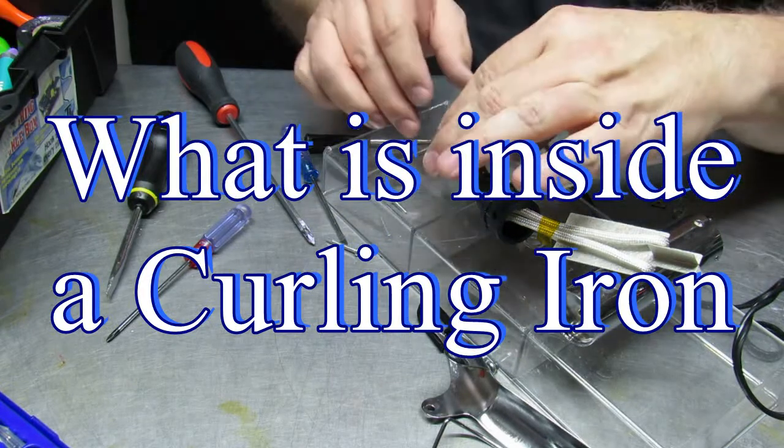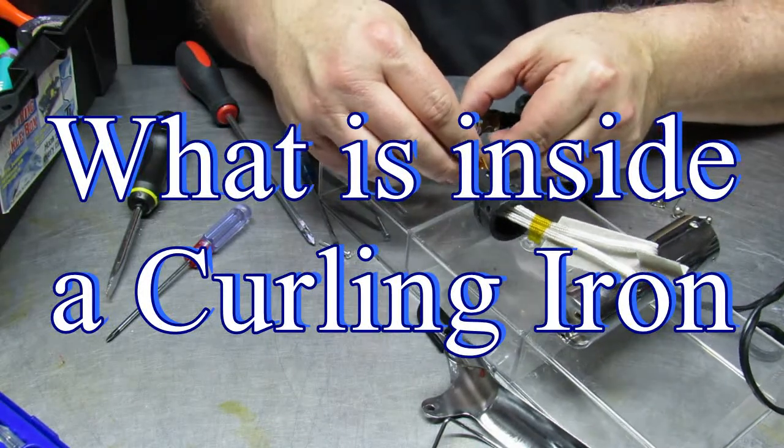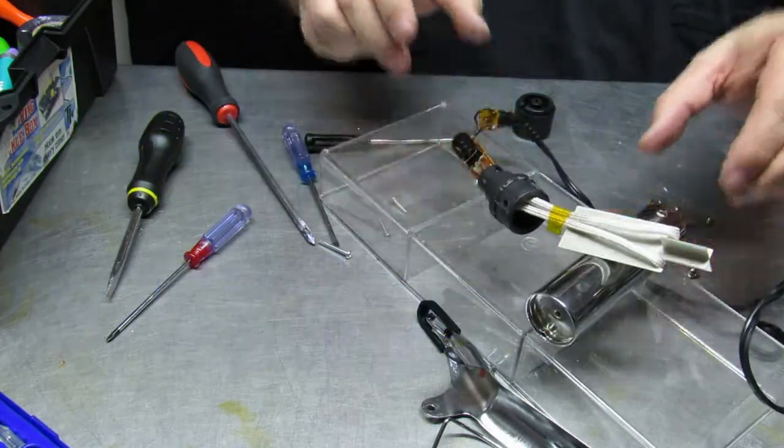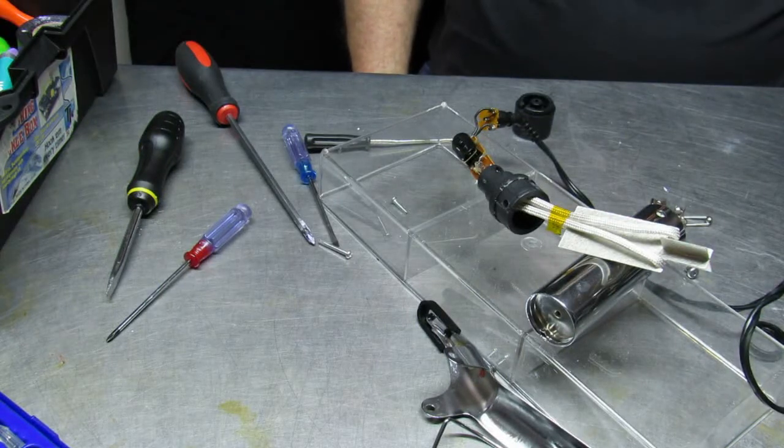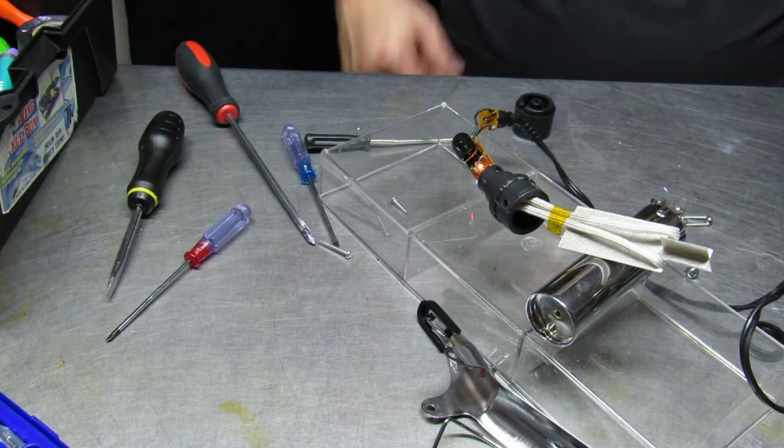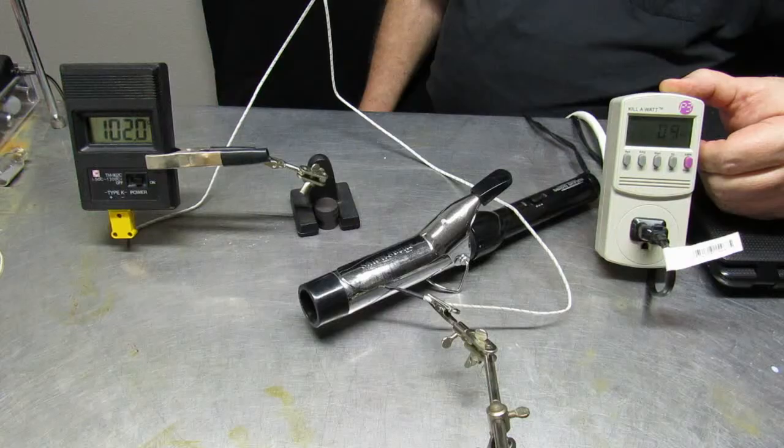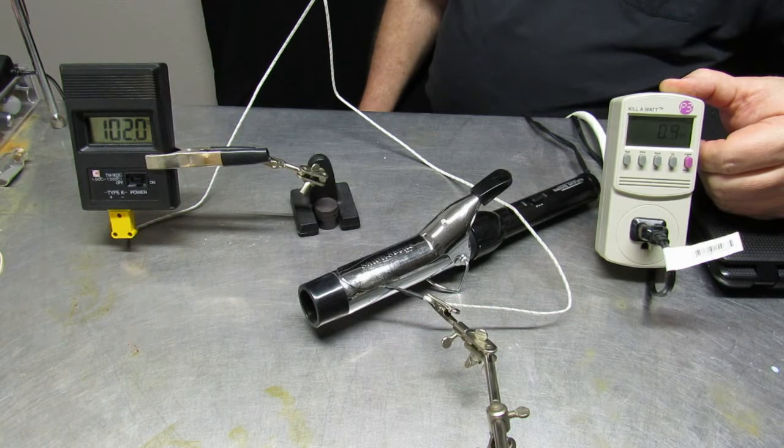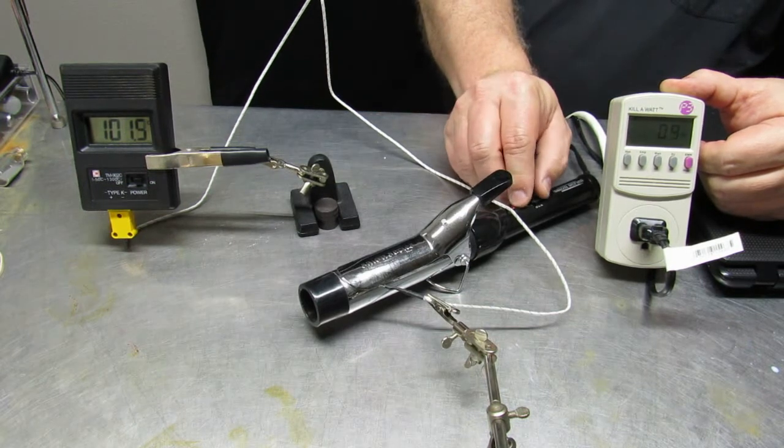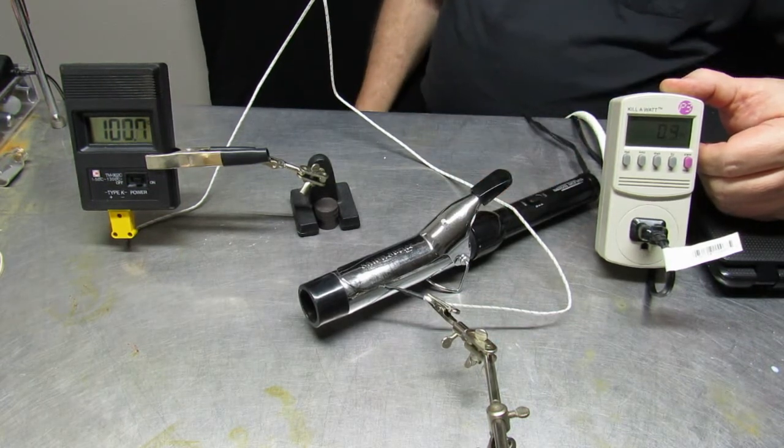For our two minutes of science today, we're going to look at what is inside a curling iron. As you can remember, not too long ago we looked at a curling iron to see how quickly it would heat up, and it took quite a while.